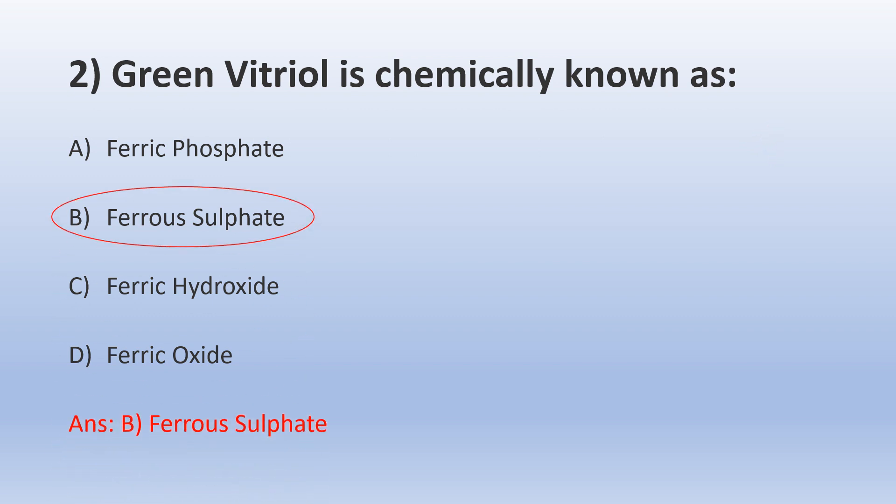The correct answer is B, Ferrous Sulfate. Green vitriol or blue-green heptahydrate is used for the treatment of iron deficiency. It helps the body to make healthy blood cells which transport oxygen to various body parts. The deficiency of iron in the body causes anemia. Chemically it is represented as FeSO4·7H2O.